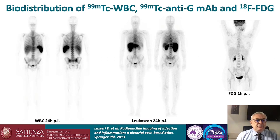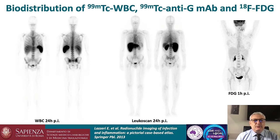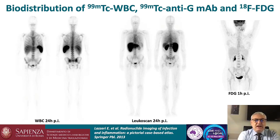Here you can see the whole-body scan of a patient injected with white blood cells at 24 hours, a patient injected with a monoclonal antibody fragment Leucoscan at 24 hours, and a patient injected with fluorodeoxyglucose at one hour post injection. For white blood cells we have more uptake in the spleen and bone marrow than liver. For the antibody peptide we have more uptake in the liver and kidneys and bone marrow. For FDG we have an optimal biodistribution that would suggest its use as a standard method for imaging infection.